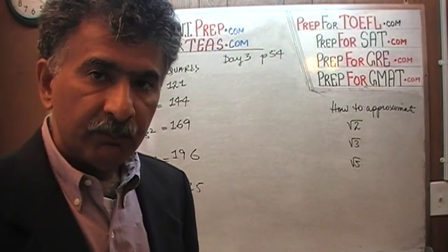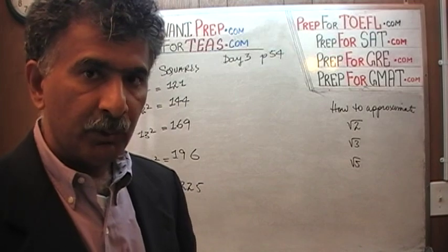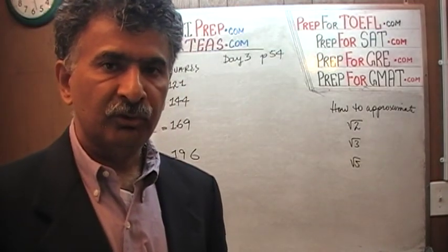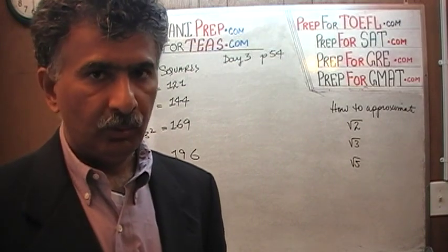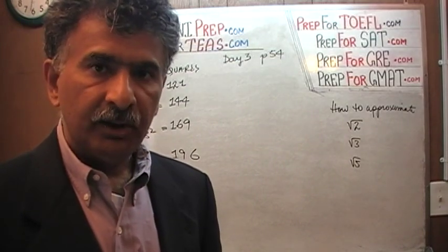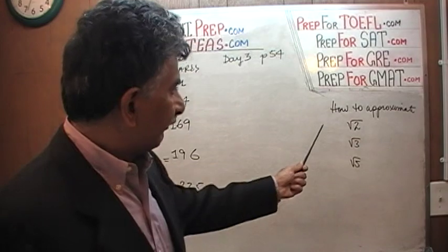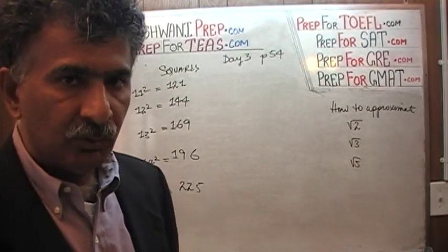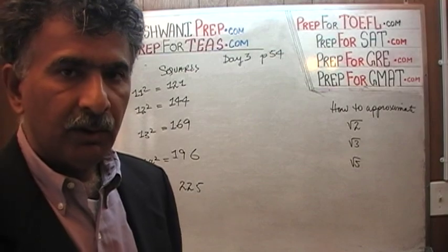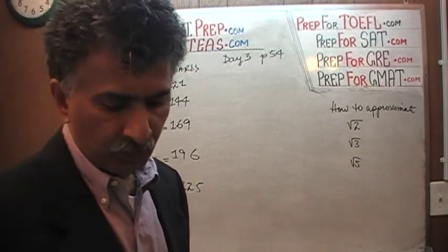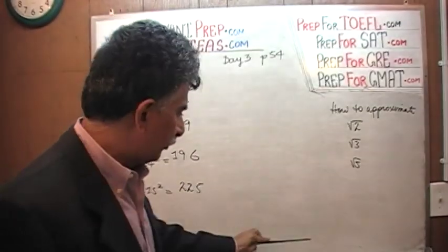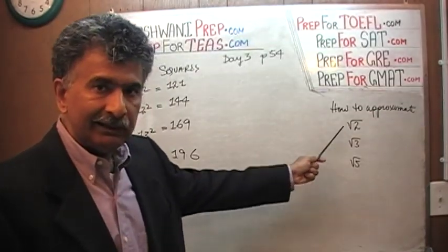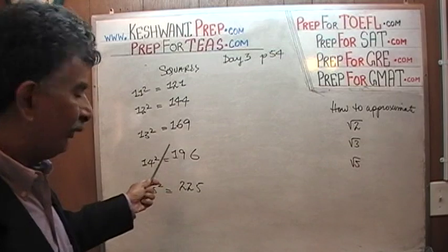Let me pick up from where we left off yesterday. Yesterday we were talking about the importance of knowing one's squares. You must know your squares 1 through 20 — we went through all of them yesterday. Where we stopped was the fact that knowing the approximate values of root 2, root 3, and root 5 comes in quite handy. Approximating these values has to do with knowing your squares.